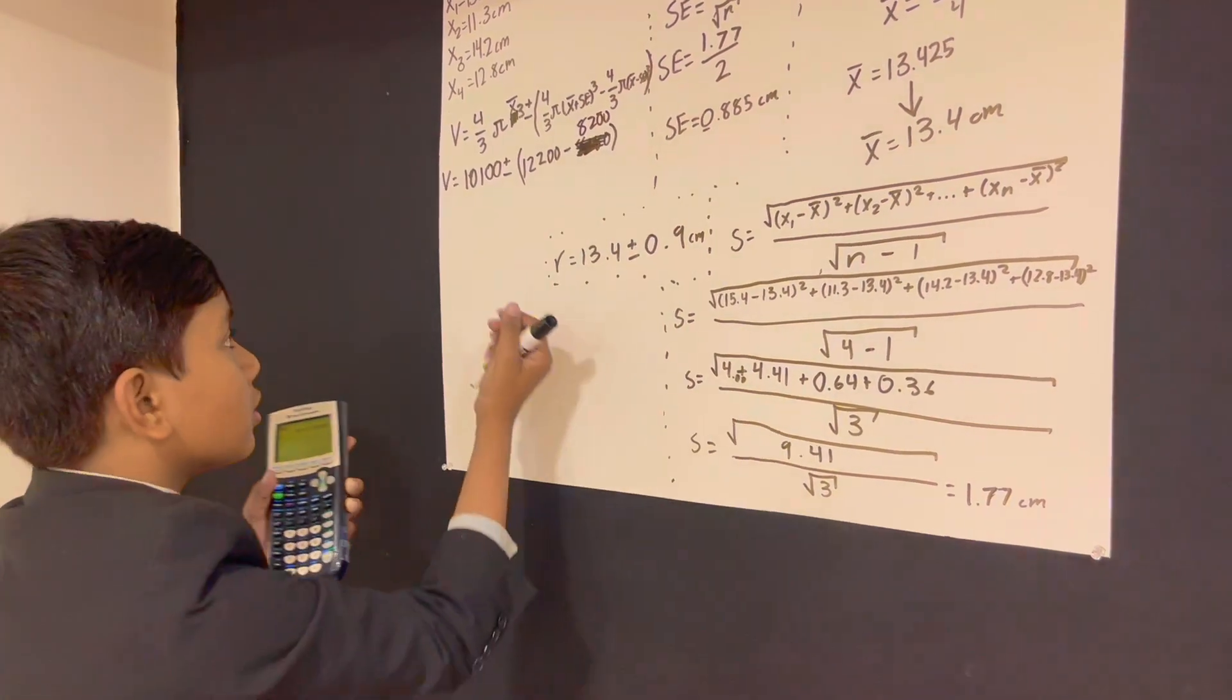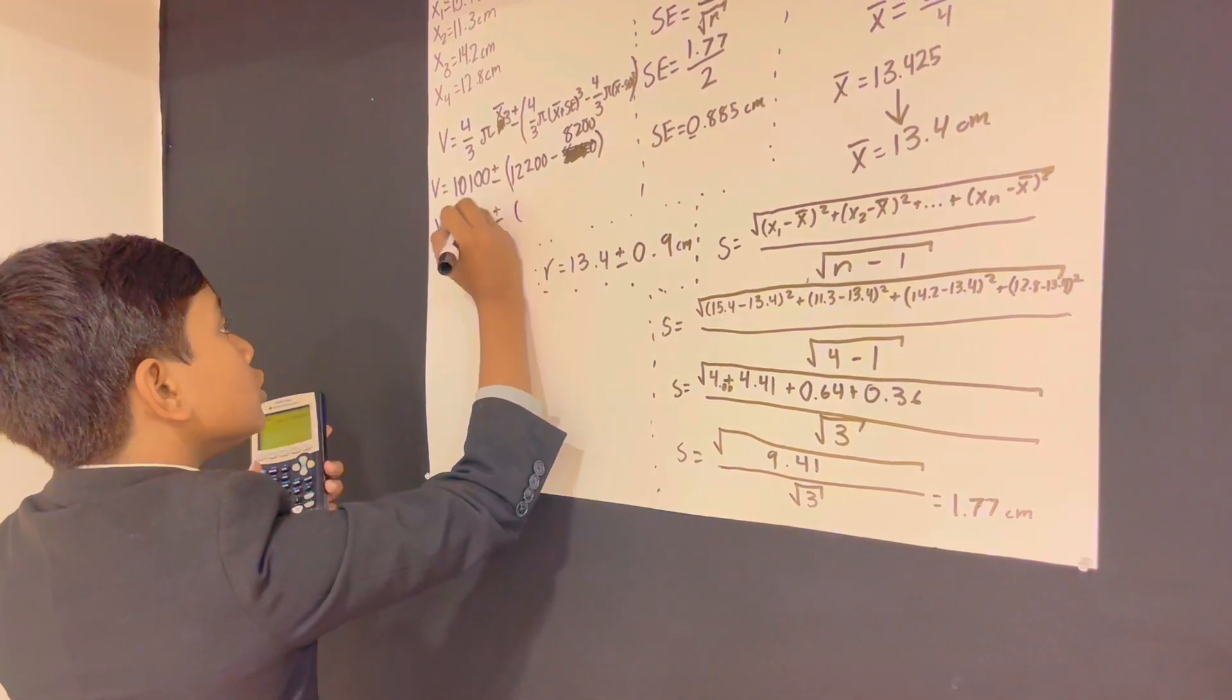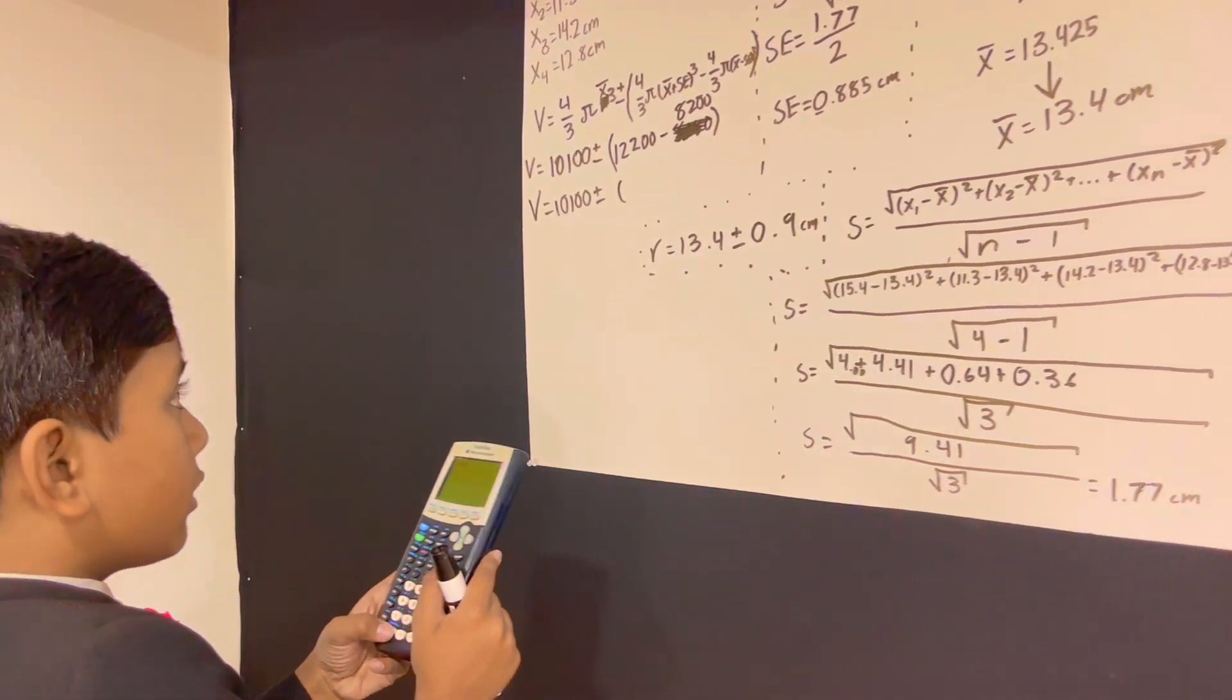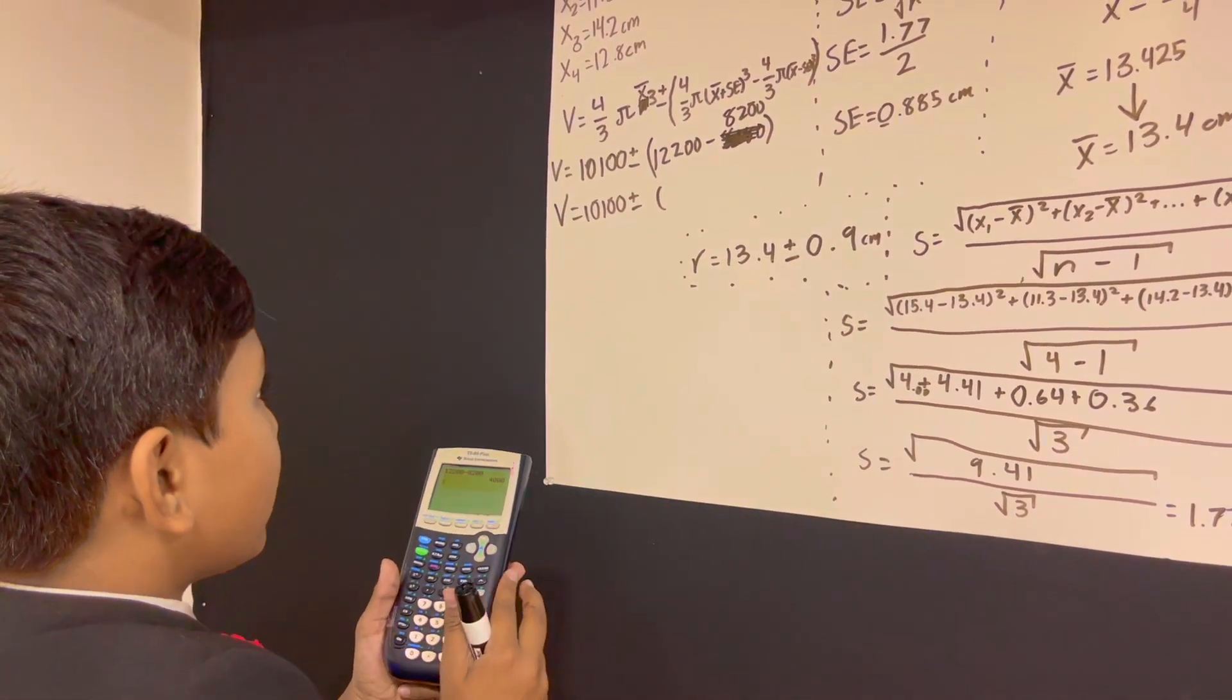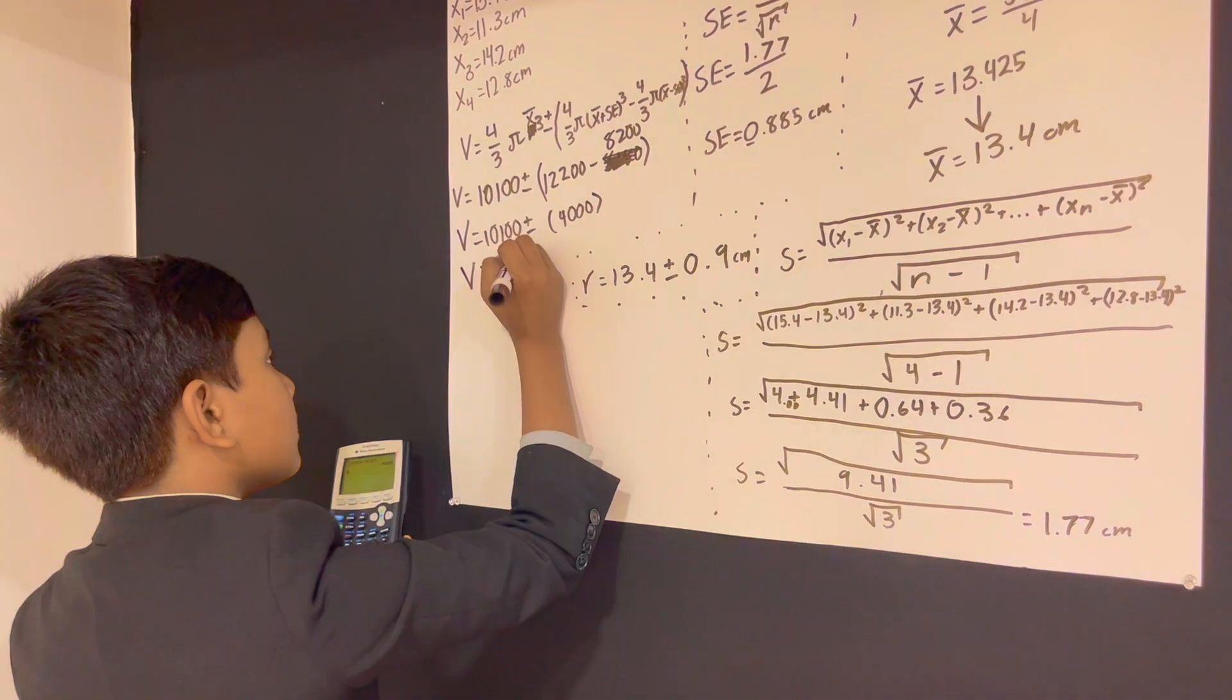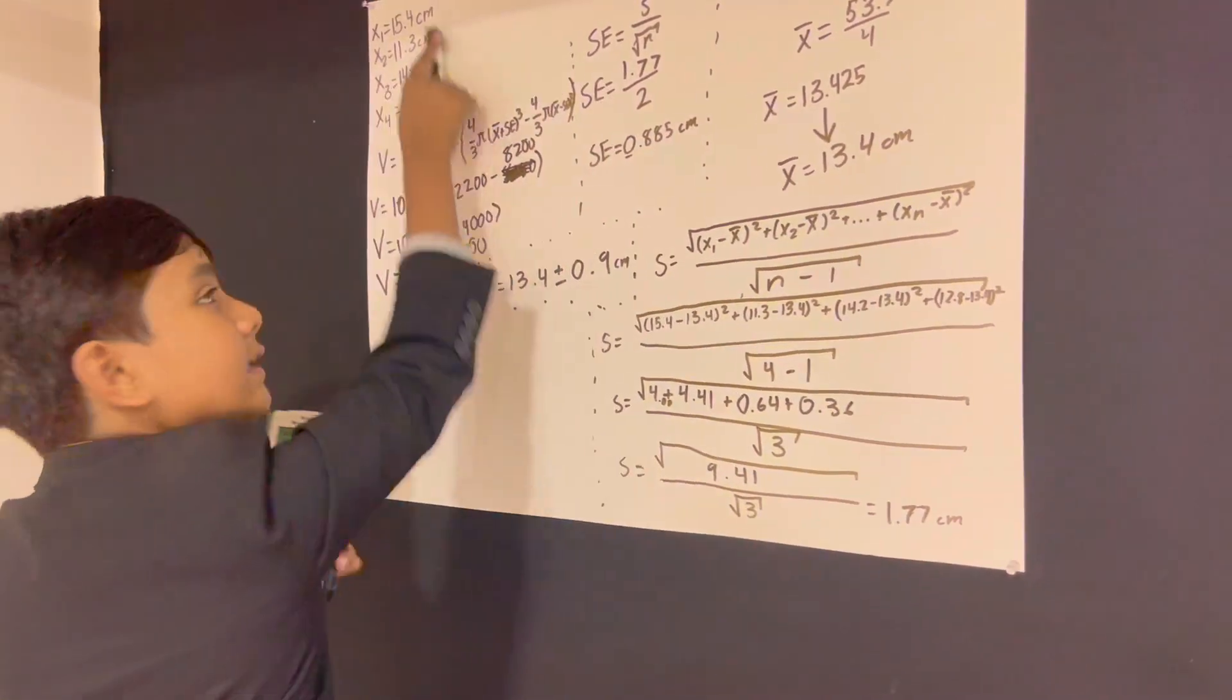So, 10,100 plus minus, this also has accuracy of up to 100, so we don't need to change it. So, we have 12,200 minus 8,200, which should be 4,000. So, we get 10,100 plus minus 4,000. Yes, I know, it's a lot of uncertainty, but look at the variation in these.